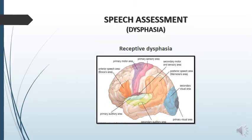We will now discuss the various abnormalities related to speech. First of all, dysphasia — in general, it is any abnormality of speech. It has got various types. First, receptive dysphasia, in which the individual is unable to understand the spoken word or the written word. The speech is fluent but disorganized. The problem lies in the Wernicke's area. Receptive dysphasia is also called posterior dysphasia.